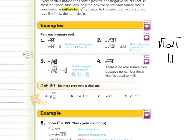Now, don't forget the negative sign. Now, the square root of a negative number — there is no real square root, because no number times itself is equal to negative 16. 4 times 4 is 16. The only way to get to negative 16 is to do negative 4 times positive 4, or positive 4 times negative 4. Those are different factors. And so, because of that, no number times itself is equal to negative 16.